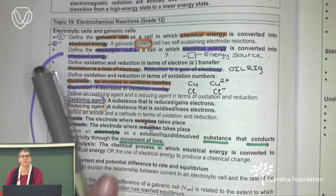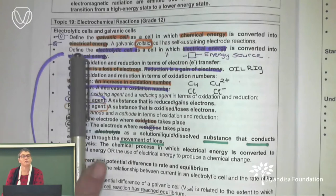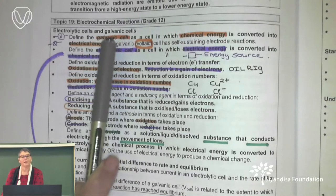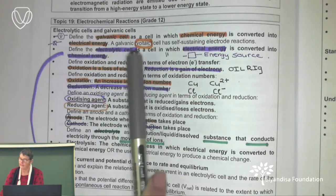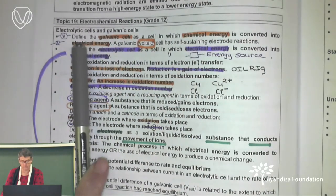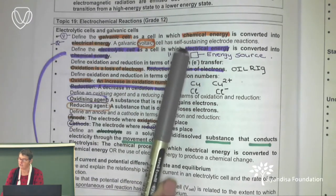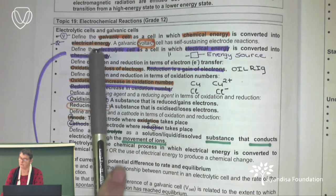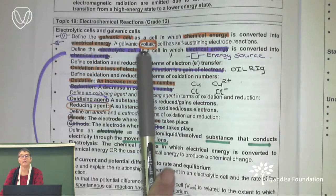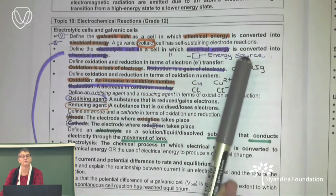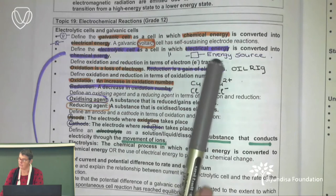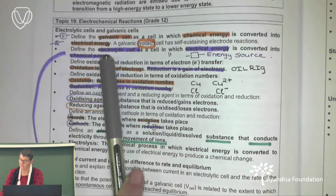Let us get started with electrochemical reactions. The first thing we need to know is that we get electrolytic and we get galvanic cells. In galvanic cells, chemical energy is converted into electrical energy. An electrolytic cell is a cell in which electrical energy is converted to chemical energy.